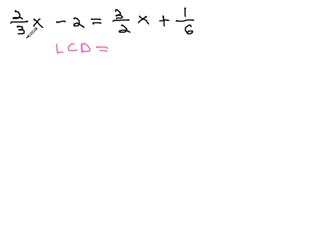Our denominators here are 3, 2, and 6. The least common denominator of all of those is 6, and so we will multiply all the numerators on both sides by 6.